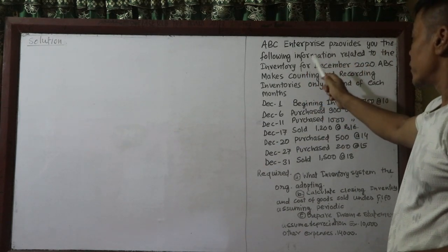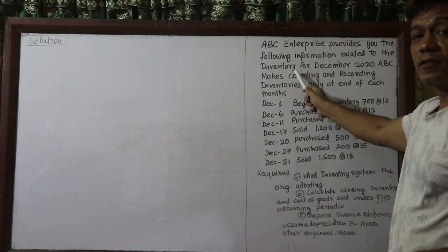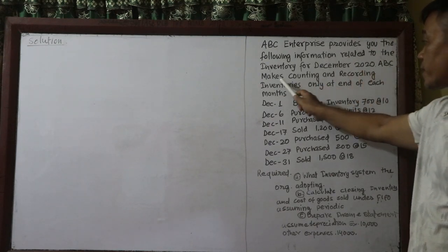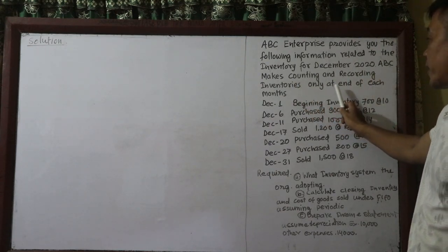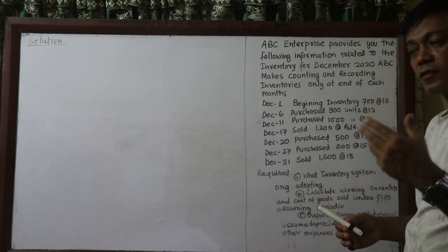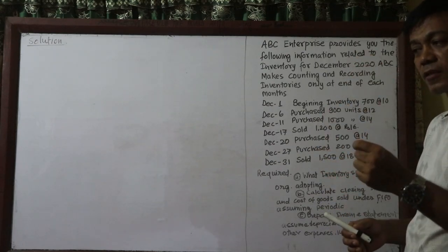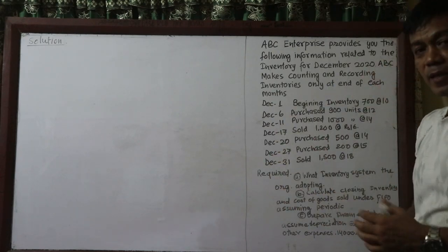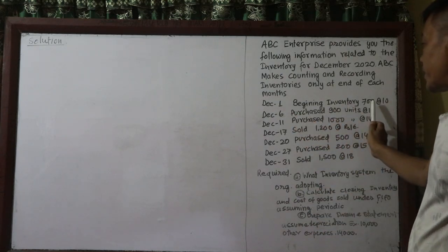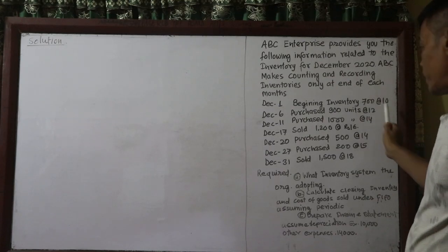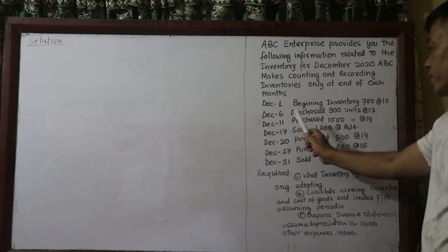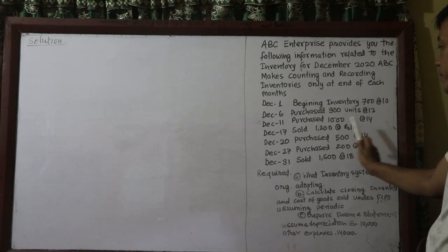ADC Enterprise provides the following information related to inventory for December 2020. In this system, the organization makes counting and recording of inventories only at the end of each month. December 1 is the beginning inventory of 700 units. December 11, purchased 100 units at the given rate, and so on.